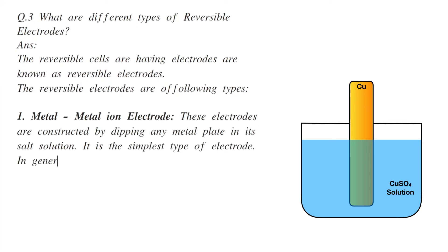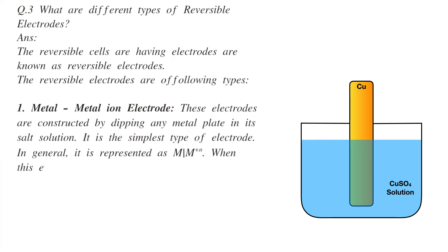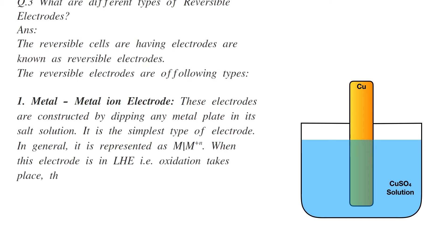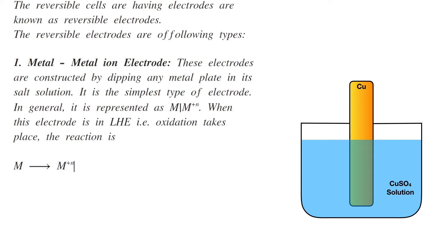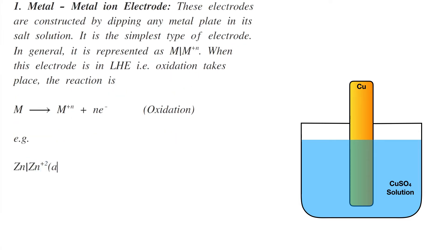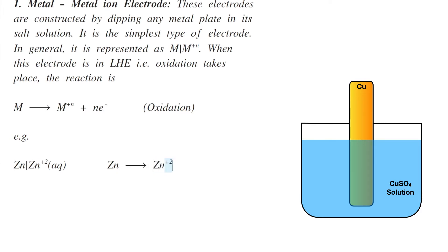In general, it is represented as metal in contact with metal ions. When this electrode is on the left-hand side, oxidation takes place: the metal is converted into metal ions, releasing electrons. For example, zinc in contact with zinc ion solution: Zn → Zn²⁺ + 2e⁻.